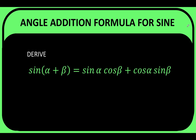Welcome back to our trigonometric identity series. In this lesson, we are going to talk about the angle addition formula for the sine function. Here's our problem for today: derive the formula sine(alpha + beta) = sine(alpha)cosine(beta) + cosine(alpha)sine(beta).